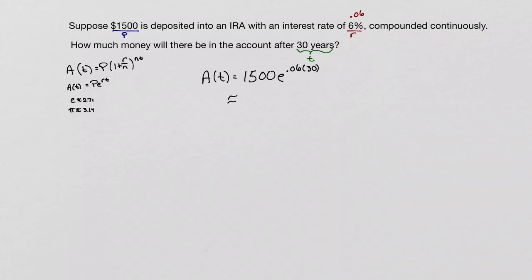Once you throw this in the calculator, which on the scientific calculators that you guys use would be 2nd ln, your answer would be approximately $9,074.47.